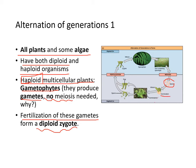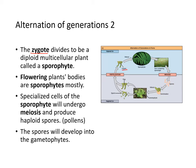The haploid state starts with spores germinating, becoming gametophytes that produce eggs and sperm. These fertilize to form a 2N diploid zygote, which undergoes mitosis to form the sporophyte. The sporophyte is a diploid multicellular plant — in ferns, the leaves are sporophytes. Specialized cells of the sporophyte undergo meiosis to produce haploid spores, which germinate again to produce gametophytes, and the cycle repeats.